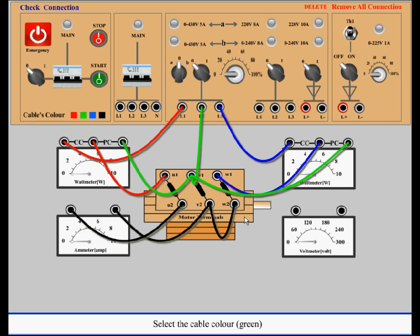Select the cable color green. Connect L2 with one terminal of the voltmeter. Select the cable color blue. Connect L3 with the other terminal of the voltmeter.